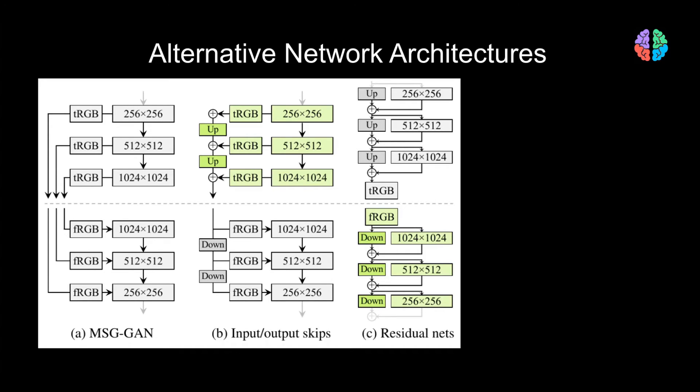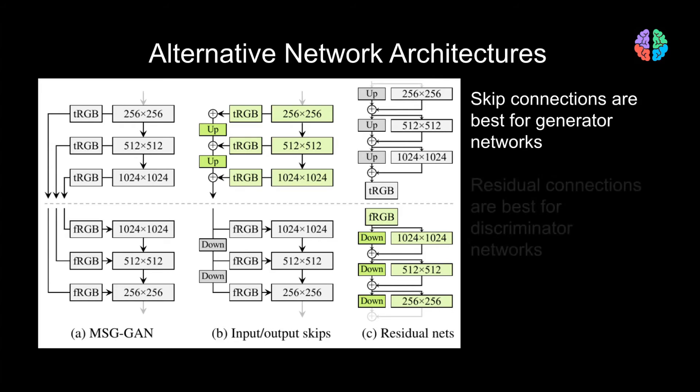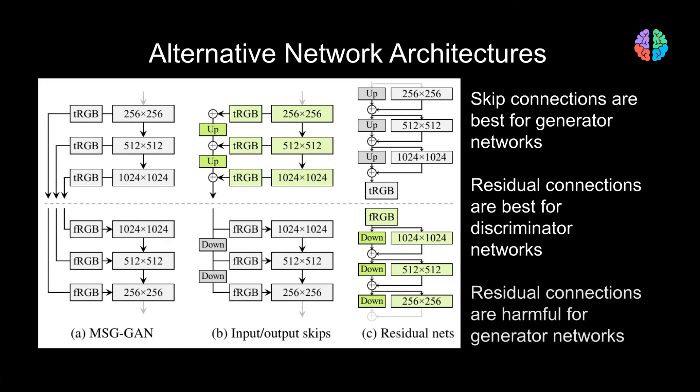As a general rule, they made three observations. Skip connections are best for generator networks, but not for discriminator networks. Residual network connections are best for discriminator networks. And residual connections are harmful for generator networks.